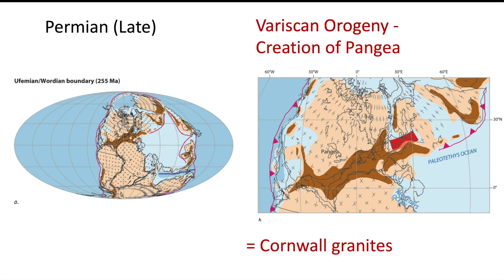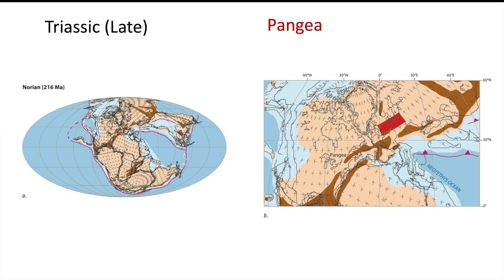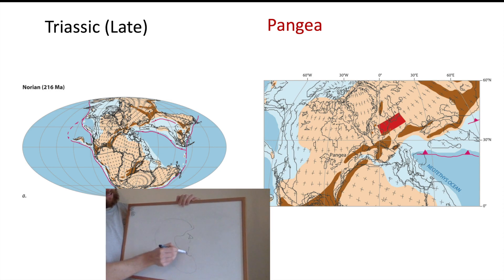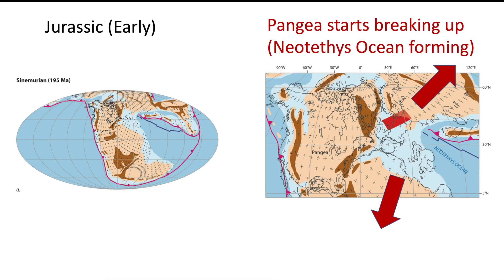Now we have reached the Variscan Orogeny, which is the rest of Gondwana catching up and smashing into Laurentia — now our Euro-American plate. Through the Triassic we're starting to see our dinosaurs. And now the Orogeny is completed: there is one continent. You can see my whiteboard diagram was highly accurate, very similar to the one in the diagram. This is now Pangea, our last supercontinent.